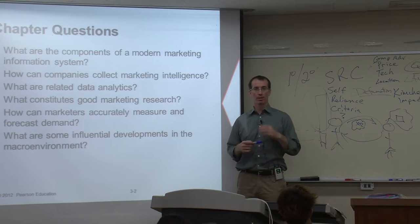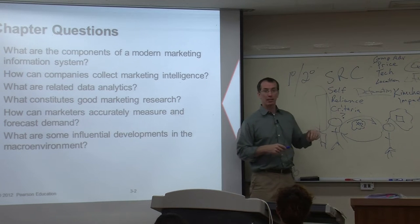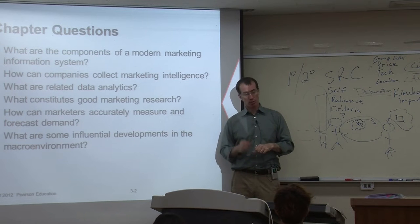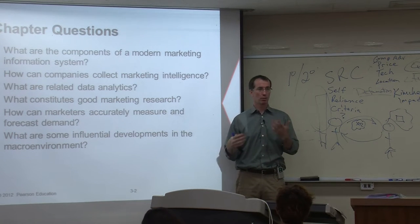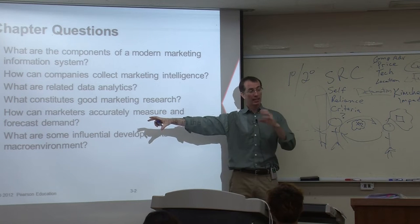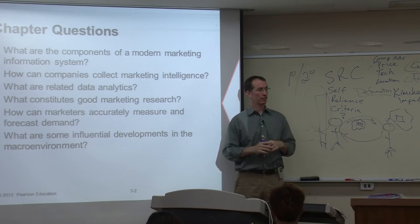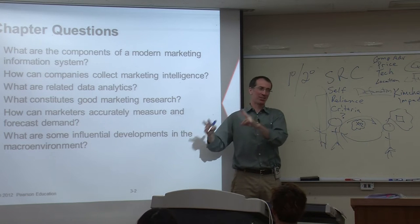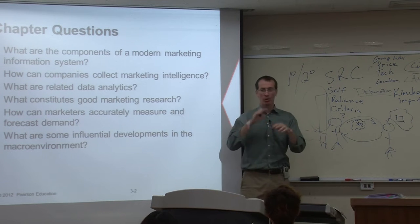Secondary research means somebody else collected the information and you use what they found. The problem with secondary research is inaccuracy. When you get information from someone else, you make mistakes — you think 'I think they mean this,' but you're wrong. You'll have double the mistakes. It could also be biased — the person who collected it chose what to research and framed the findings their way.